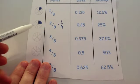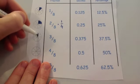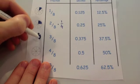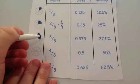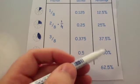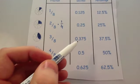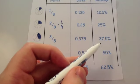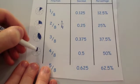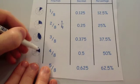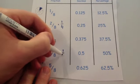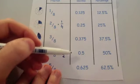Three eighths is three sections: a quarter (25%) plus another 12.5% gives 37.5%, or 0.375. Four eighths is four sections — that's half the shape. So four eighths equals a half: 50% or 0.5.